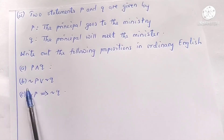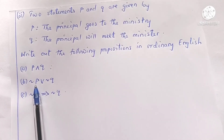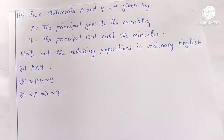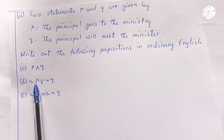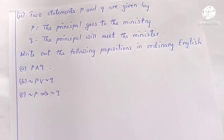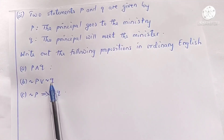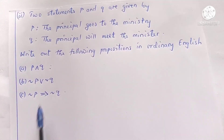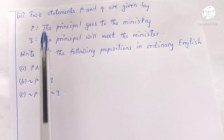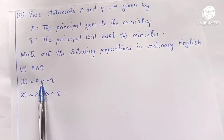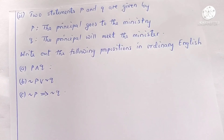For the second proposition, we have the negation of p or the negation of q. The negation of p is 'the principal will not go to the ministry,' and the negation of q is 'the principal will not meet the minister.' So this statement reads: 'the principal will not go to the ministry, or the principal will not meet the minister.'